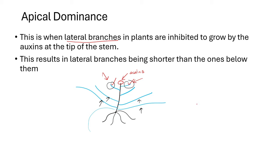That is why when you see trees, a tree is shaped wider at the bottom. The branches at the bottom grow longer than the branches at the top. That is why all trees have this similar triangular shape — the lateral branches at the bottom are longer than the branches at the top, because at the top there are auxins produced that inhibit the growth of those upper lateral branches.